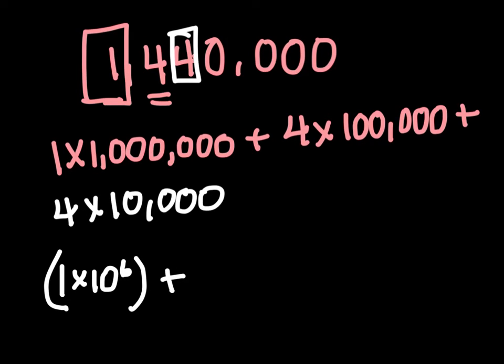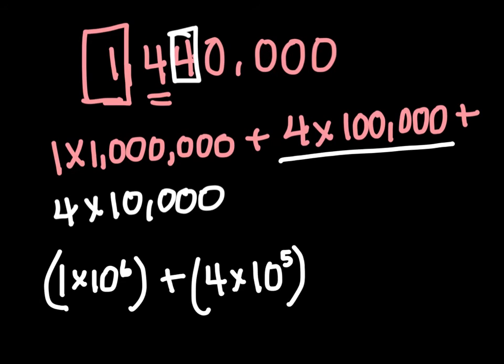And then we're going to add that to our 4 times 100,000. So let's do the same thing again with the 4. We're going to say 4 times how many zeros do we have in 100,000? 1, 2, 3, 4, 5, 10 to the 5th power plus our final 4, which would be 4 times 10 to the 4th power.